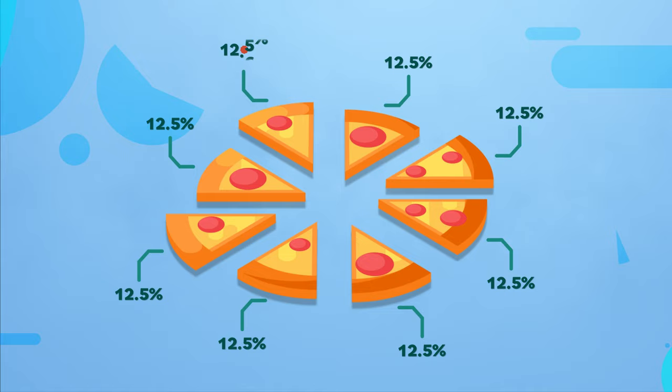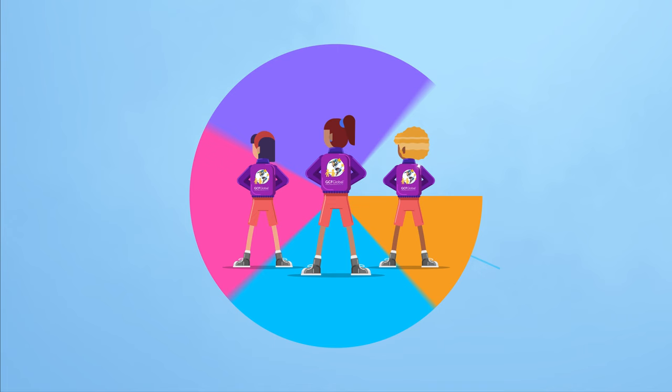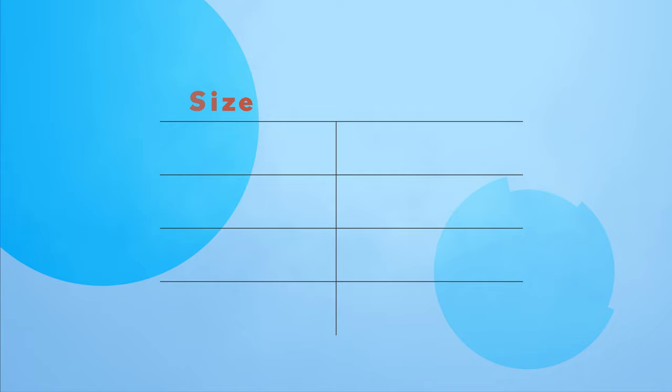Let's take a look at an example. At a school, the girls' basketball teams are having jackets made for the regional championship. The head coach wants to create a pie chart that shows which jacket sizes they'll need. She starts off by organizing the data into a table. In the first column, she records the sizes.